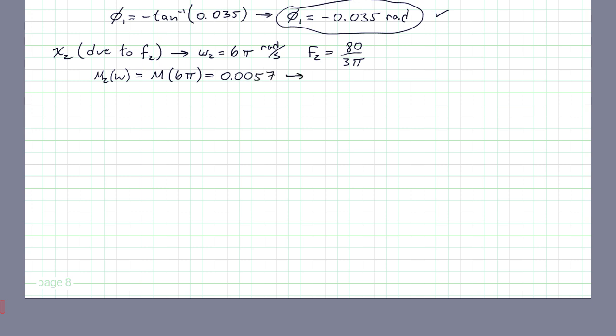So that means that our amplitude for the second response term will be that second force times that second magnitude ratio, which is 80/3π multiplied by the magnitude ratio that we just found, and you get x2 equal to 0.0484 meters.